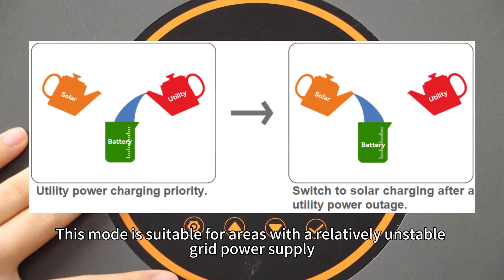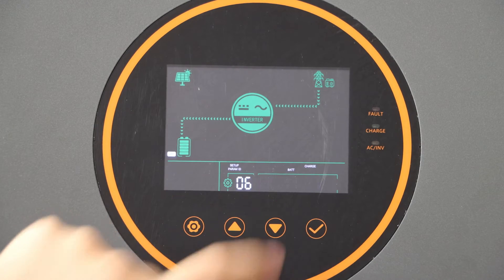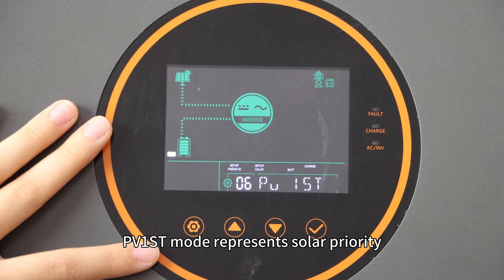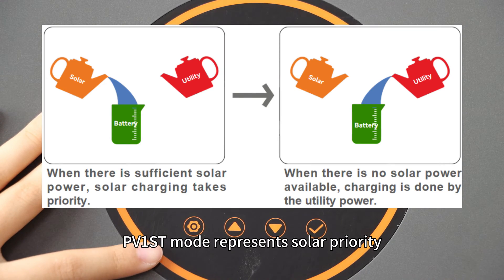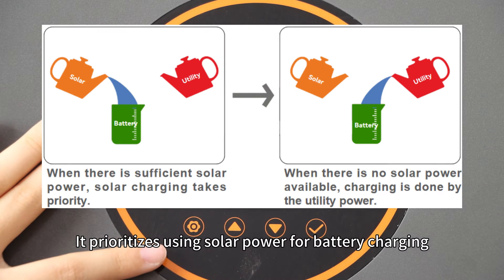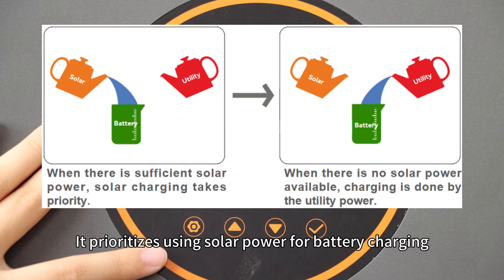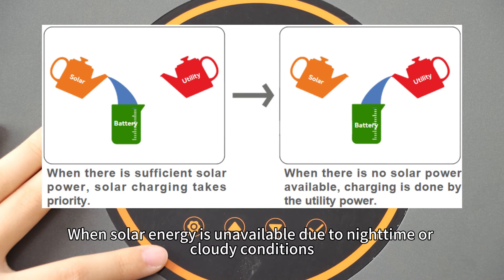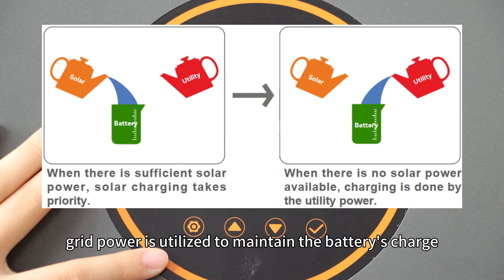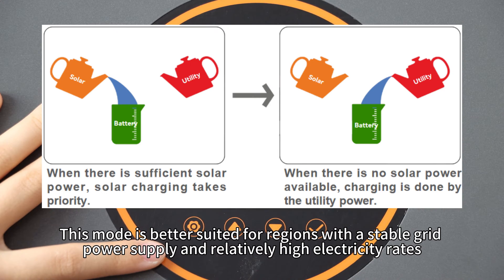This mode is suitable for areas with a relatively unstable grid power supply. PV-1ST mode represents the solar priority — it prioritizes using solar power for battery charging. When solar power is unavailable due to nighttime or cloudy conditions, grid power is utilized to maintain the battery's charge. This mode is better suited for regions with stable grid power supply and relatively high electricity rates.